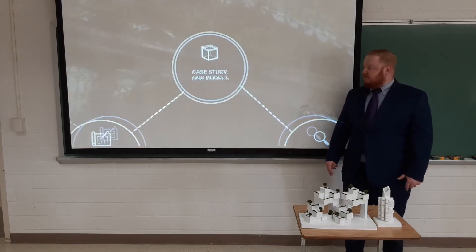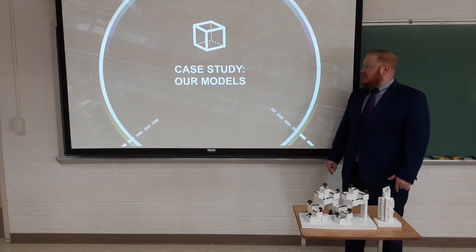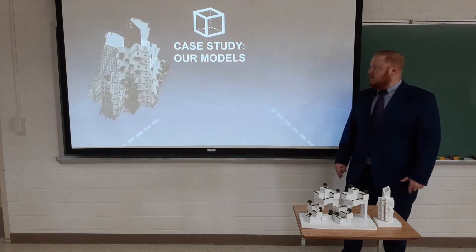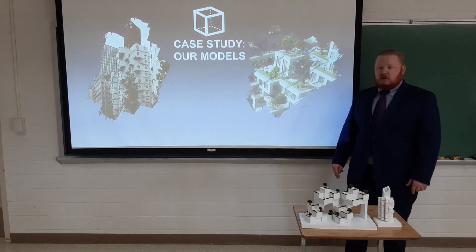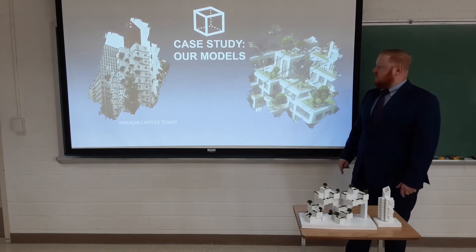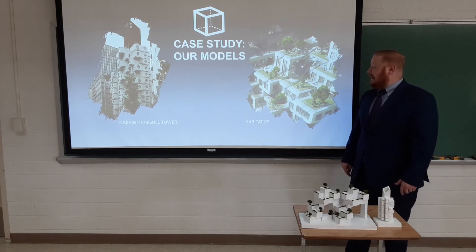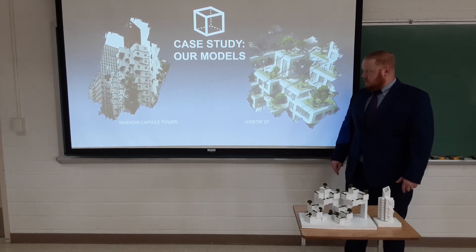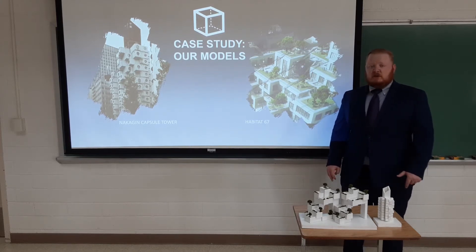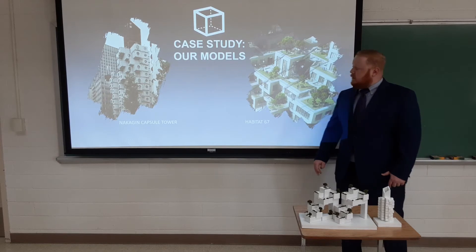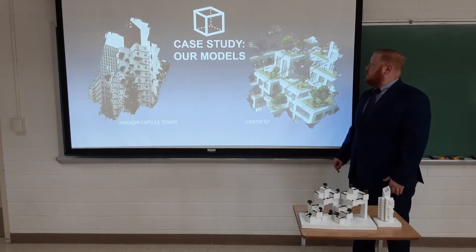Next we'll be discussing a couple of case study models — namely the Nakagin Tower building in Tokyo, Japan, as seen on the left of this slide, and Habitat 67 in Montreal, Quebec, Canada, as seen on the right. Both of these are prefab buildings built around the same time, but we'll be comparing them to see why one was markedly more successful than the other.